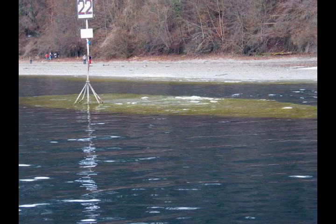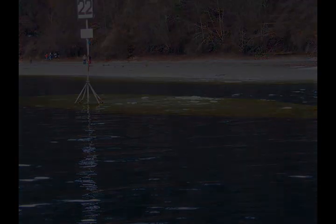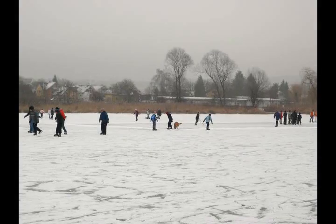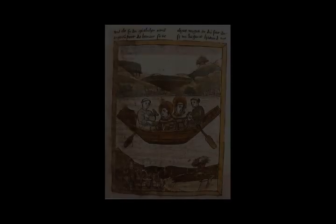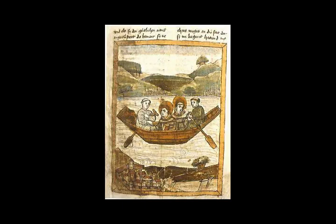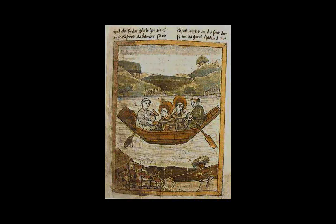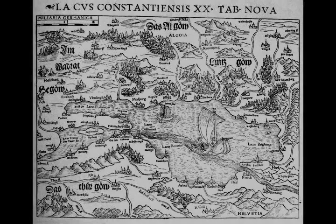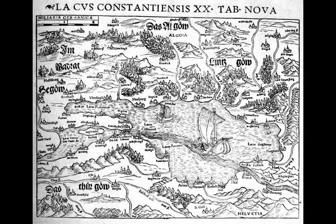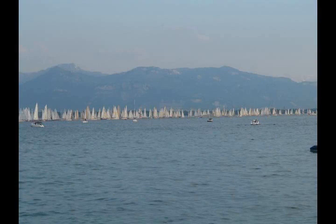Lake Constance is located in the foothills of the Alps. The shore length of both main lakes is 273 kilometers, of which 173 kilometers are in Germany, 28 kilometers in Austria, and 72 kilometers in Switzerland. Lake Constance has a total area of 536 square kilometers, making it the third largest lake in central Europe by area after Lake Balaton and Lake Geneva. It is also the second largest by water volume after Lake Geneva and extends over 69.2 kilometers between Bregenz and Stein am Rhein. Its catchment area is around 11,500 square kilometers.